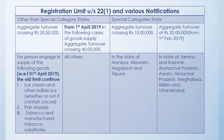The certain businesses where the 20 lakhs limit is still applicable are ice cream and other edible ices, paan masala, tobacco, and manufacturing of tobacco-related products. For these, the limit is 20 lakhs. But for all others, it is 40 lakhs. In the special category, the limit of 20 lakhs becomes 10 lakhs — that is in the states of Manipur, Mizoram, Nagaland, and Tripura. In these four states, the limit is 10 lakhs.